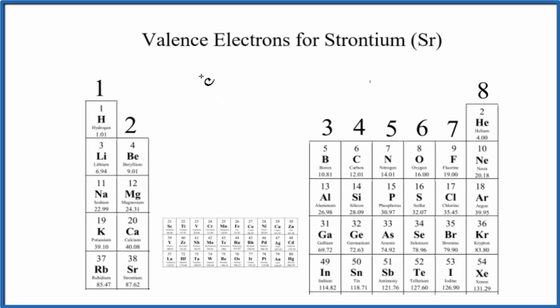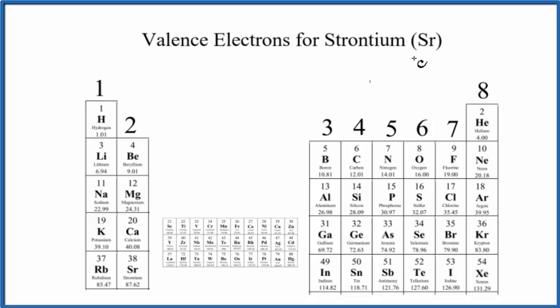There are two main ways we can find the number of valence electrons for strontium, that's Sr. The first way is just to look at the patterns for valence electrons on the periodic table.